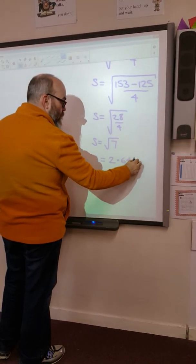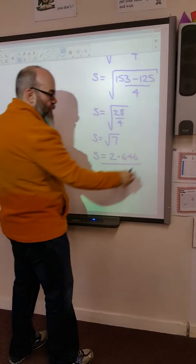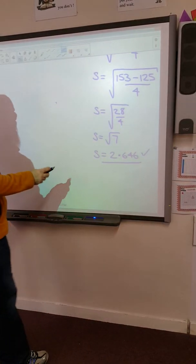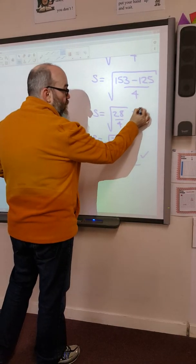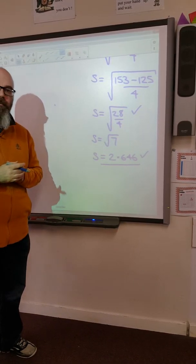So s is going to be 153 minus 125 over 4, having worked out the 625 over 5, and again we take the square root of the whole lot.